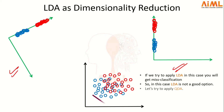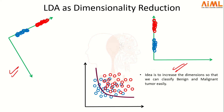When LDA fails, we apply QDA — we create a quadratic decision boundary, and the data points get classified very well. The question is how this works. QDA increases the dimension so that we can classify benign and malignant tumors easily.